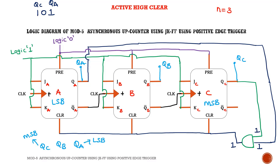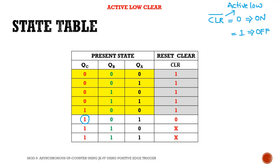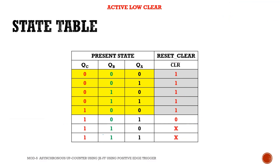Now let us design the same mod 5 asynchronous up counter using active low clear. Since there is a bar on clear (clear-bar), it is called active low. To turn on active low clear, apply 0 — if you apply 0, it is in the ON state; if you apply 1, it is in the OFF state. For mod 5, whenever 101 is detected we need to make clear-bar = 0. In all other positions it remains 1, and states 6 and 7 are don't cares.